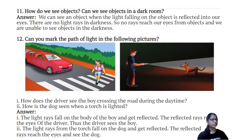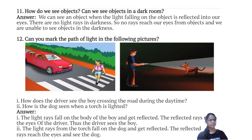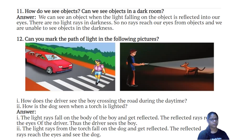Can you mark the path of light in the following pictures? How does the driver see the boy crossing the road during the daytime? The light rays fall on the body of the boy and get reflected. The reflected rays reach the eyes of the driver, and thus the driver sees the boy. The light rays from the torch fall on the dog and get reflected, and the reflected rays reach the eyes and the person sees the dog.